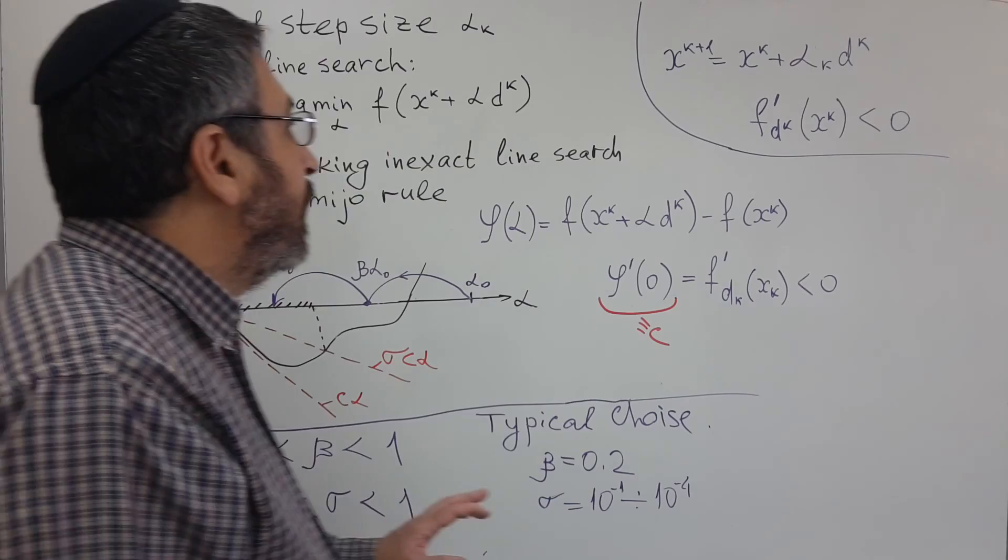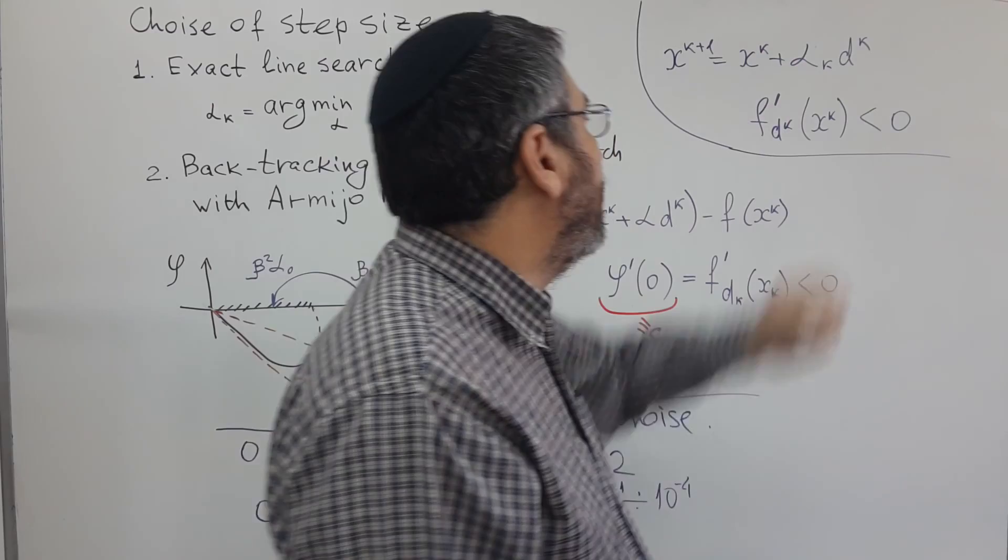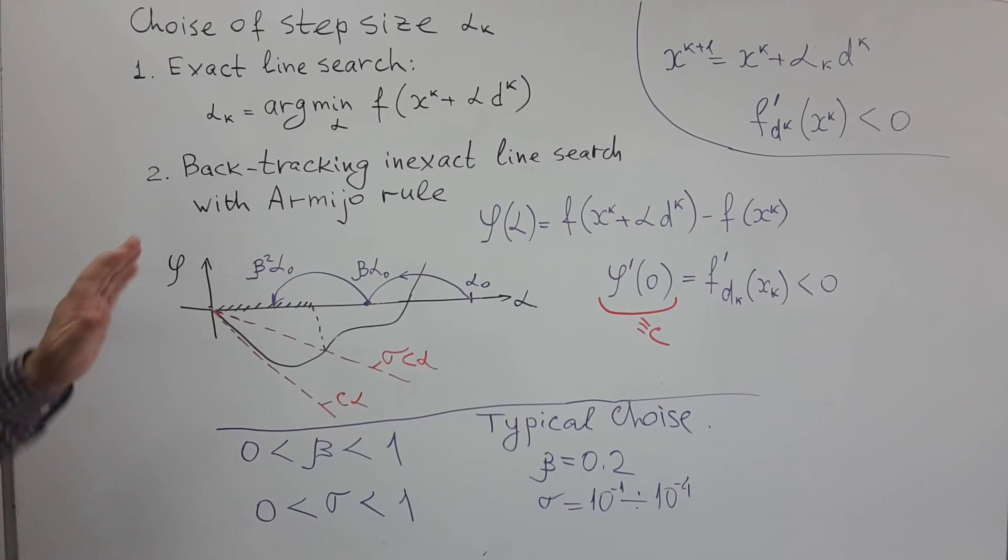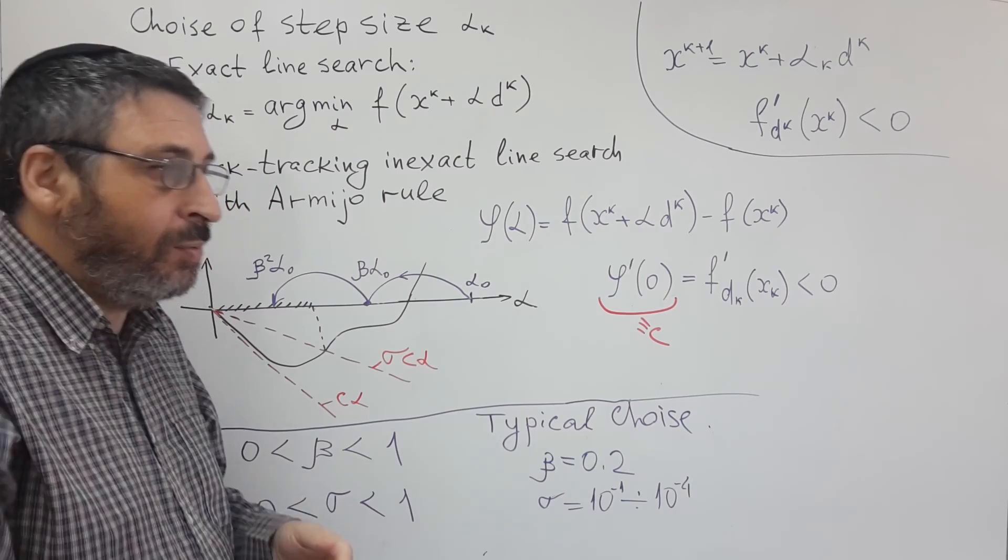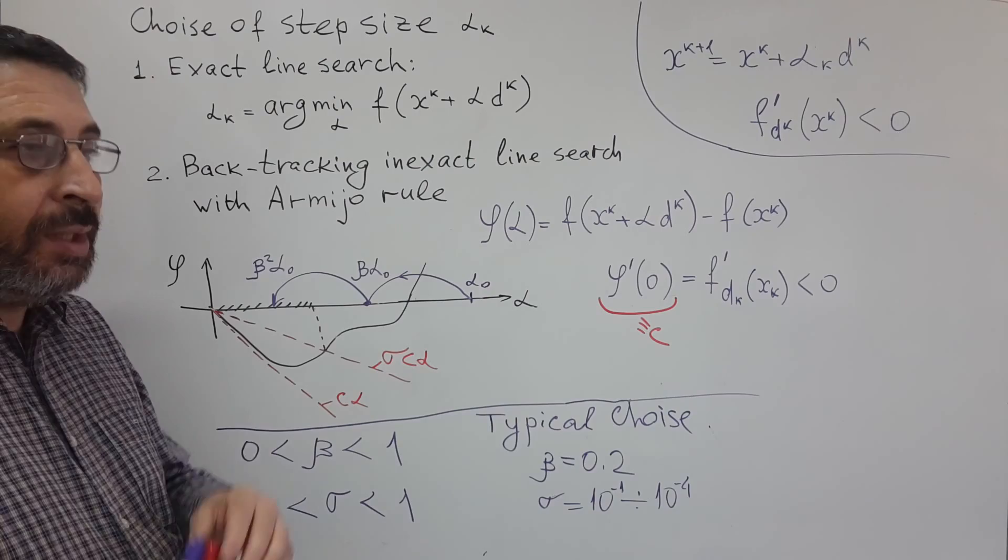Now, let's talk about how to choose step size in line-search method. One possibility would be to perform exact line-search, to perform one-dimensional optimization like we already learned, with bisection or golden section or cubic and quadratic interpolation.